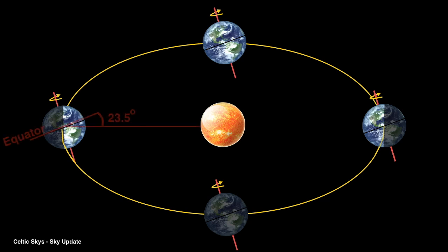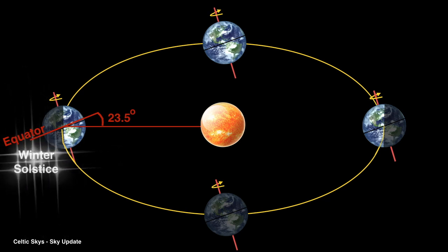However, it reaches a point where the axis is at its maximum angle away from the Sun. And as the orbit continues, the axis starts to tilt back towards the Sun. At the point of maximum angle, we call it the winter solstice.